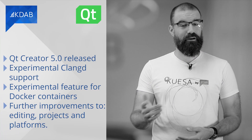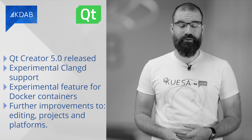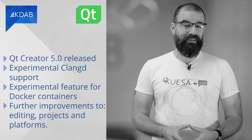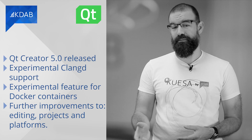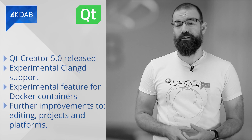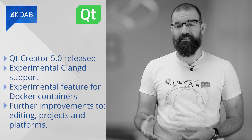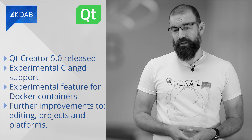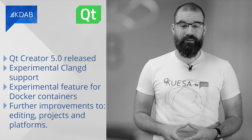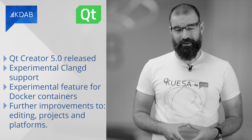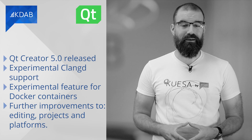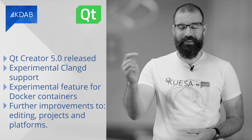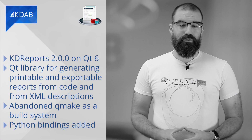A few weeks ago, the first major version update of Qt Creator, version 5.0, was released. It comes with experimental support for Clangd as the backend for the C/C++ code model — this feature is optional and off by default. It replaces the libclang-based code model, building on support for the language server protocol. Another experimental feature is support for building and running applications in Docker containers. Further improvements have been made regarding editing projects and platforms. Read more in the release notes linked below.